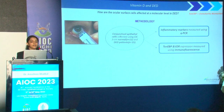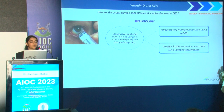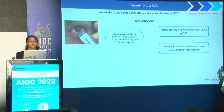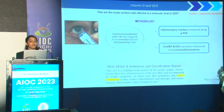We examined how ocular surface cells are affected at the molecular level in dry eye disease. We took conjunctival epithelial cells using impression cytology from normal patients and from dry eye disease patients. We performed quantitative PCR to look at inflammatory markers and immunofluorescence to measure TonEBP and vitamin D receptor expression. TonEBP is an osmolarity biomarker representing the osmolarity of the ocular surface, and we know from the TFOS DEWS definition that hyperosmolarity plays an important etiological role in dry eye.